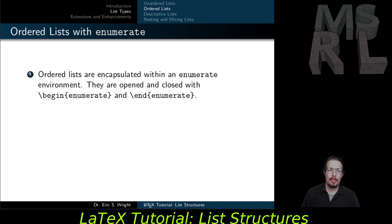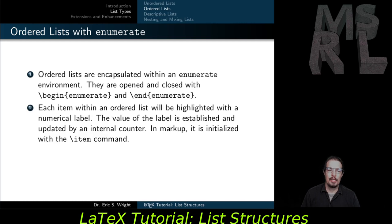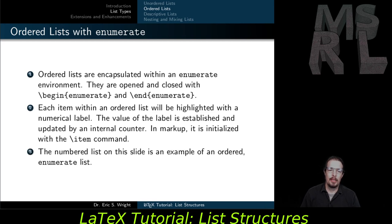Ordered lists, on the other hand, are encapsulated within an enumerate environment. They're opened and closed with begin enumerate and end enumerate. Each item within an ordered list will be highlighted with a numerical label, and the value of the label is established and updated by an internal counter. In markup, it's initialized with the item command. Since the items of an enumerated list have internal counters, they can have labels attached to them and you can refer to those labels from elsewhere within your text using the reference command or the \ref command. The numbered list on this slide is an example of an ordered enumerate list.